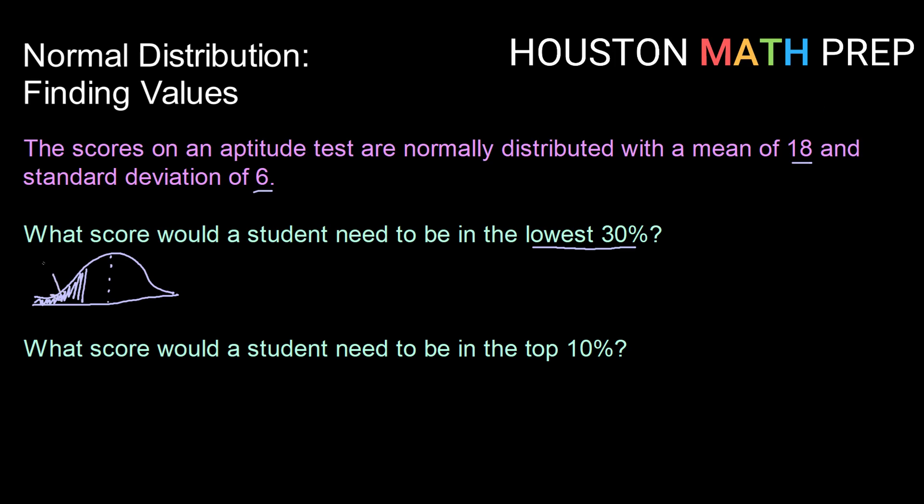So if this is 30%, or 0.3, then I'm going to use inverse norm. My area to the left of the value that I'm interested in is 0.3.